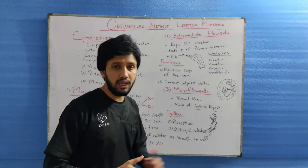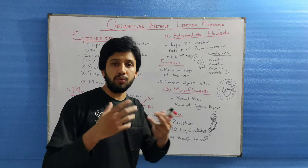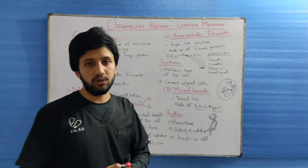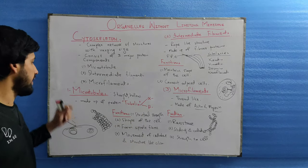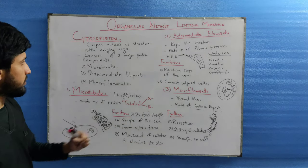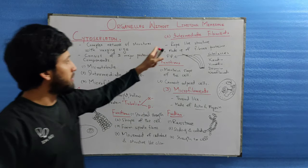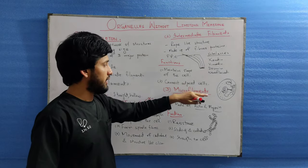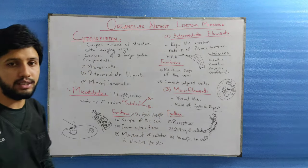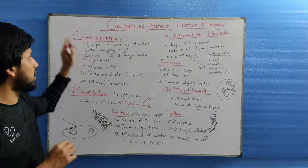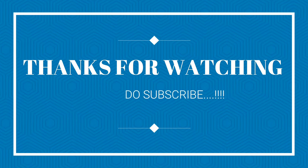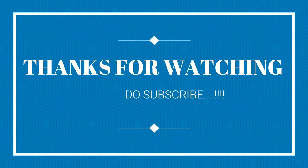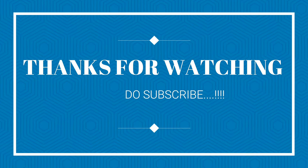Microfilaments also provide strength to the cell. So these are the functions performed by microtubules, intermediate filaments, and microfilaments — all components of the cytoskeleton.